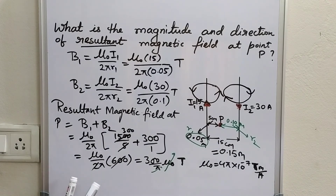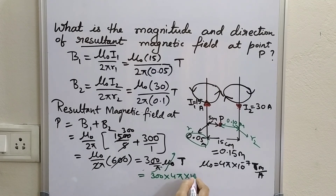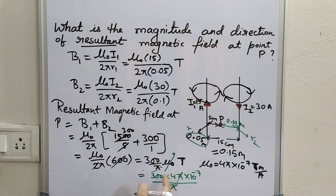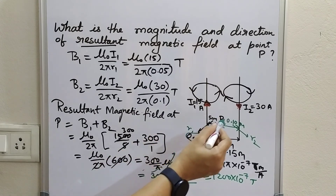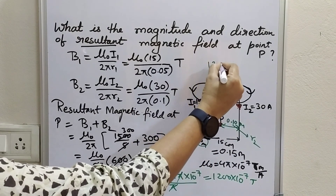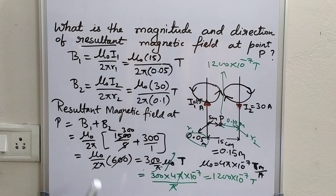So the final answer is that the magnetic field at point P is 1200 × 10⁻⁷ Tesla, directed into the page at that location between the two conductors.